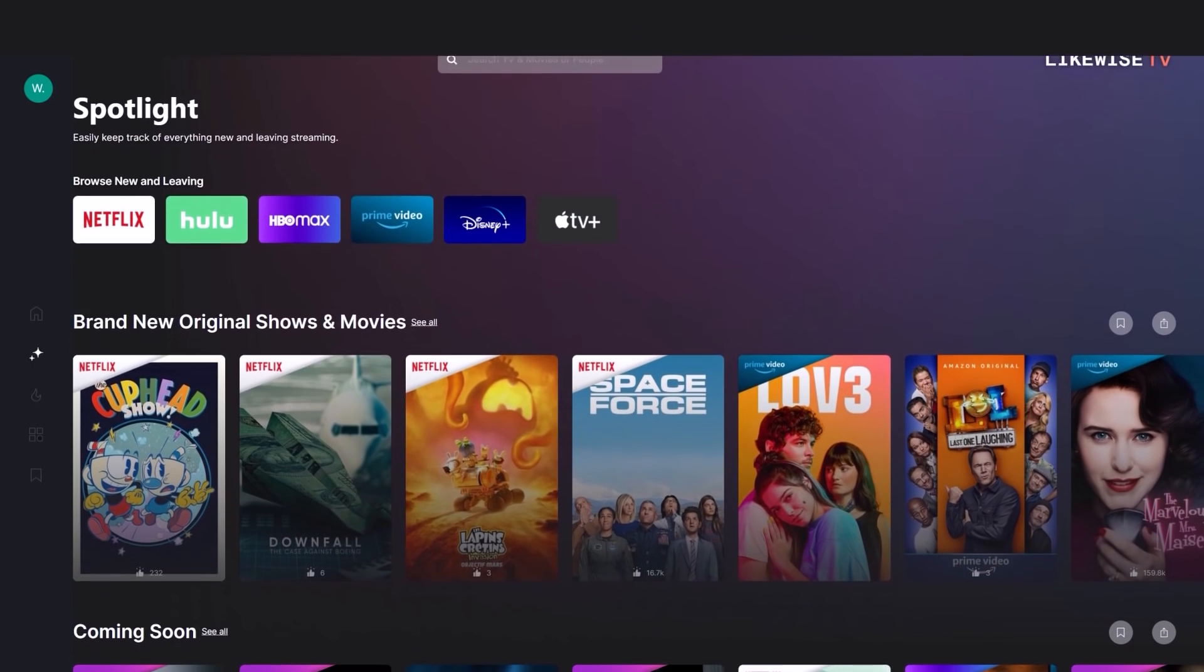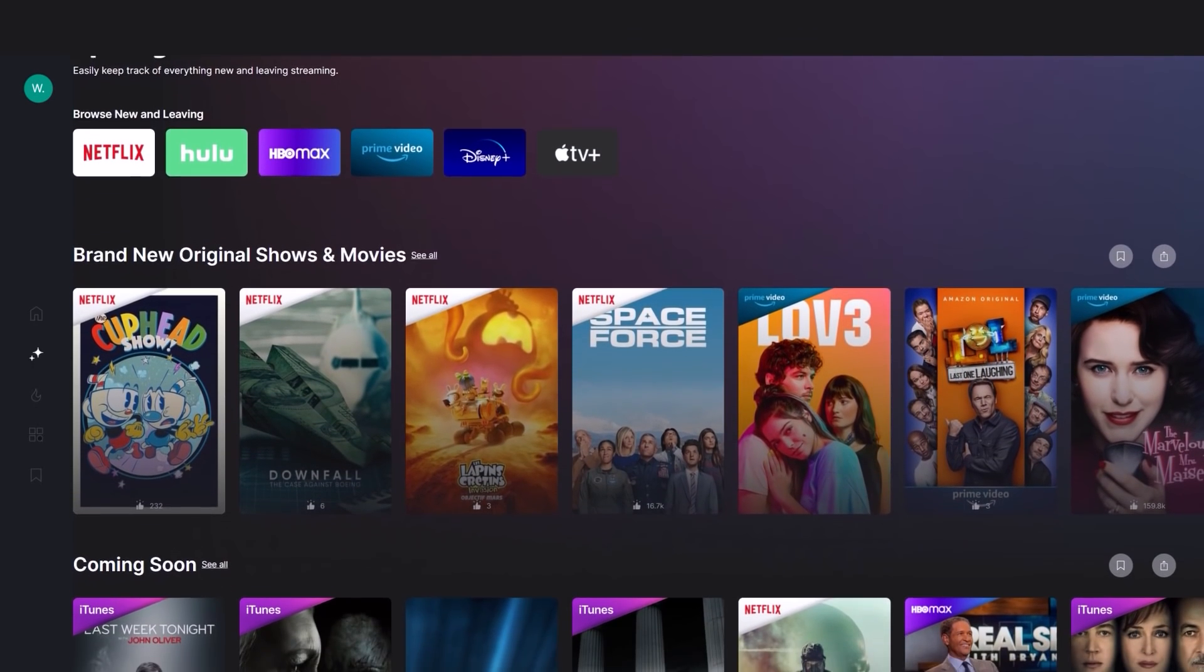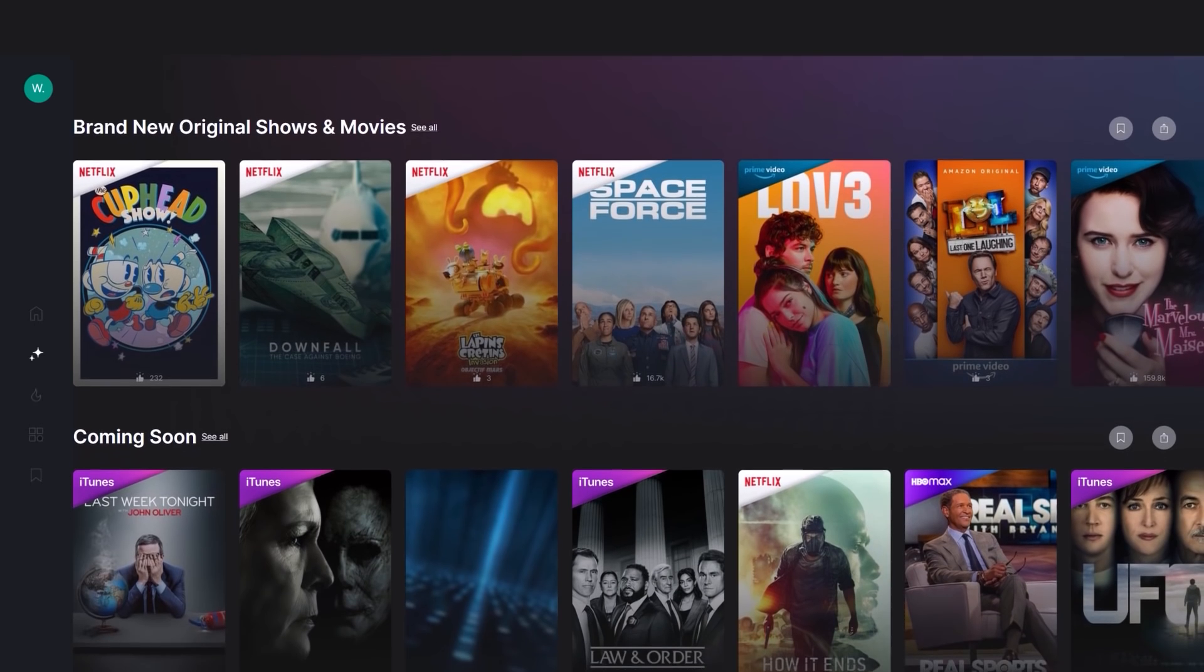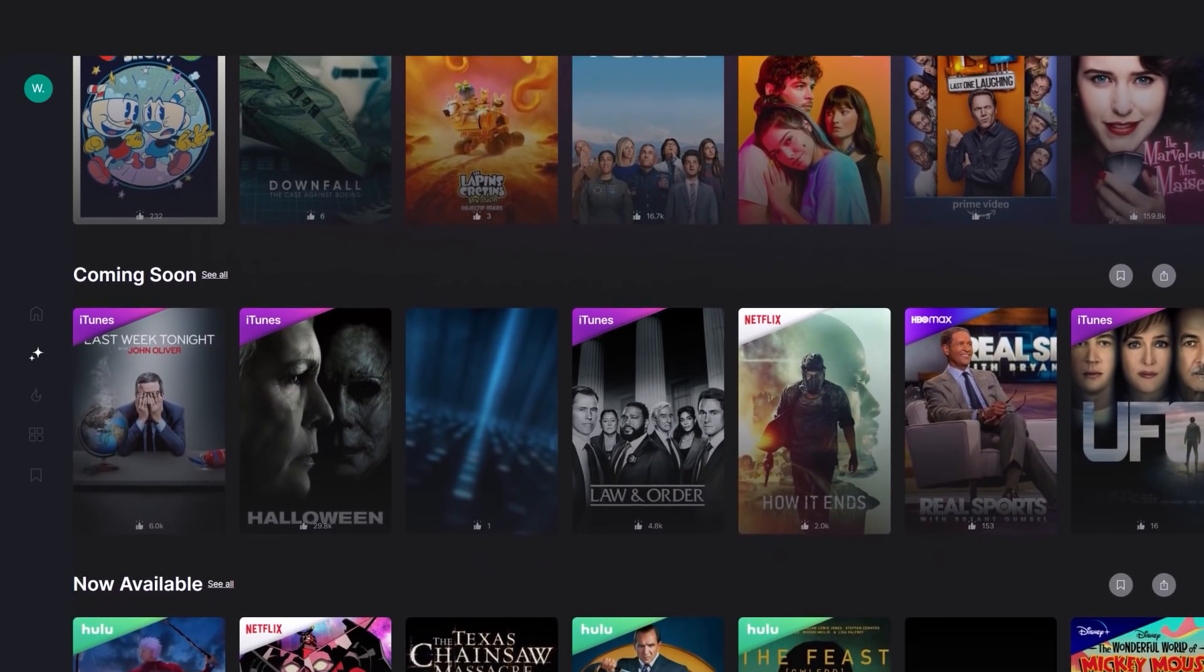Instead of endless scrolling and app-hopping to watch my favorite content, I can find what I want quickly and efficiently by accessing my streaming services through Likewise TV. Plus, once Likewise TV gets a sense of my taste, it curates a list of new shows and movies that I might like. And through its spotlight feature, it gives me a heads up on what's new on each of my streaming services and what's about to leave so I can prioritize binging before it's too late.